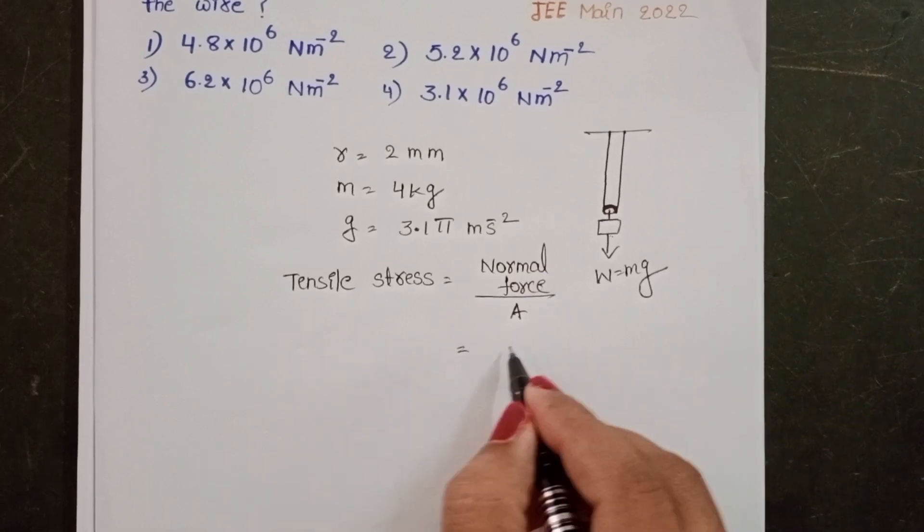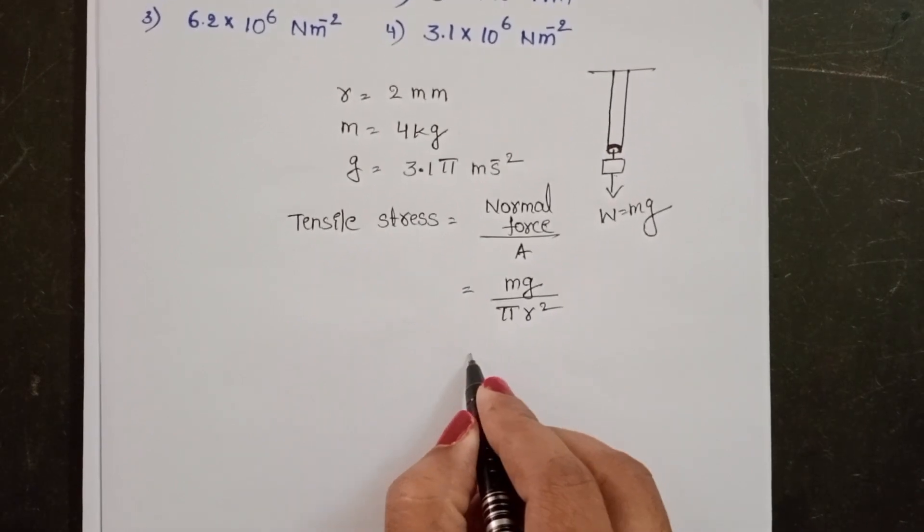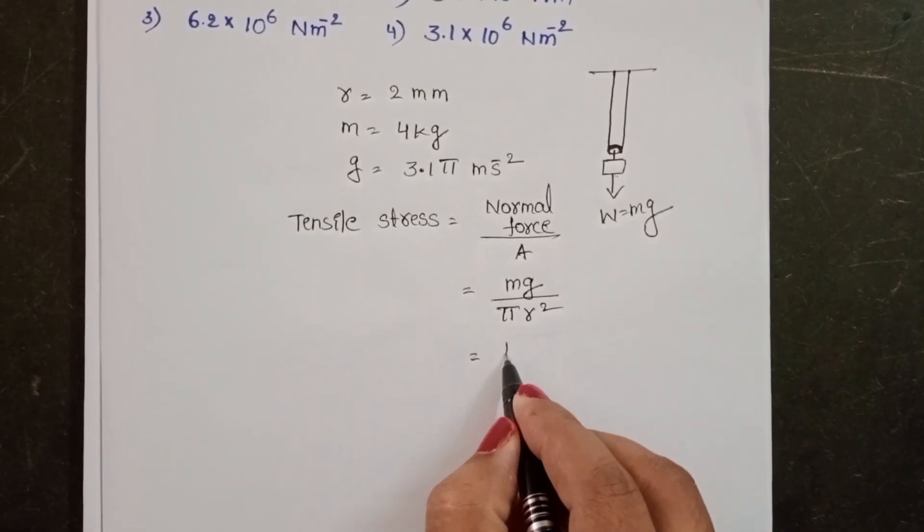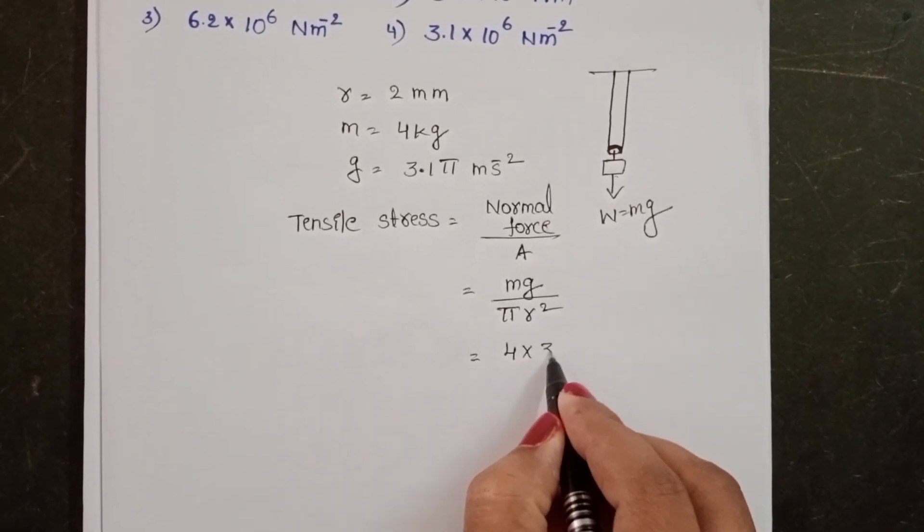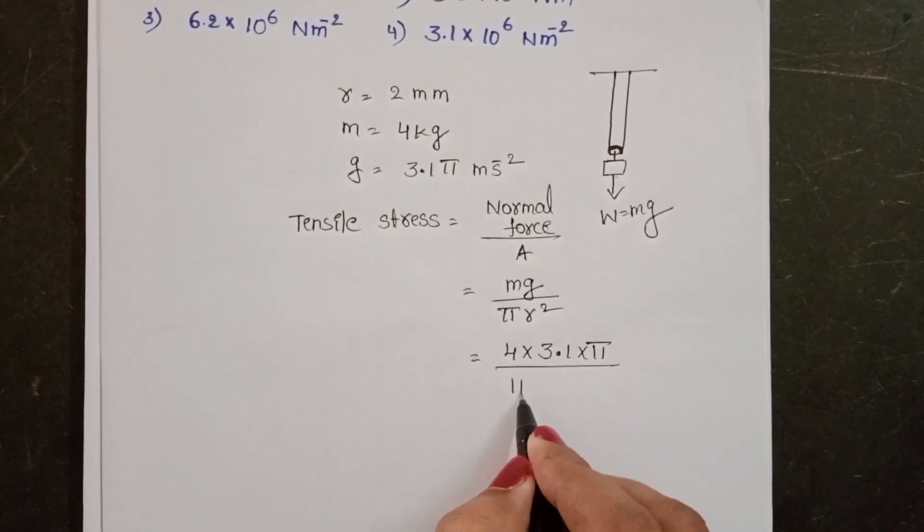Here normal force is mg and area of cross section pi r square. Substitute the values. Mass is 4 kg, G value 3.1 into pi, pi into...